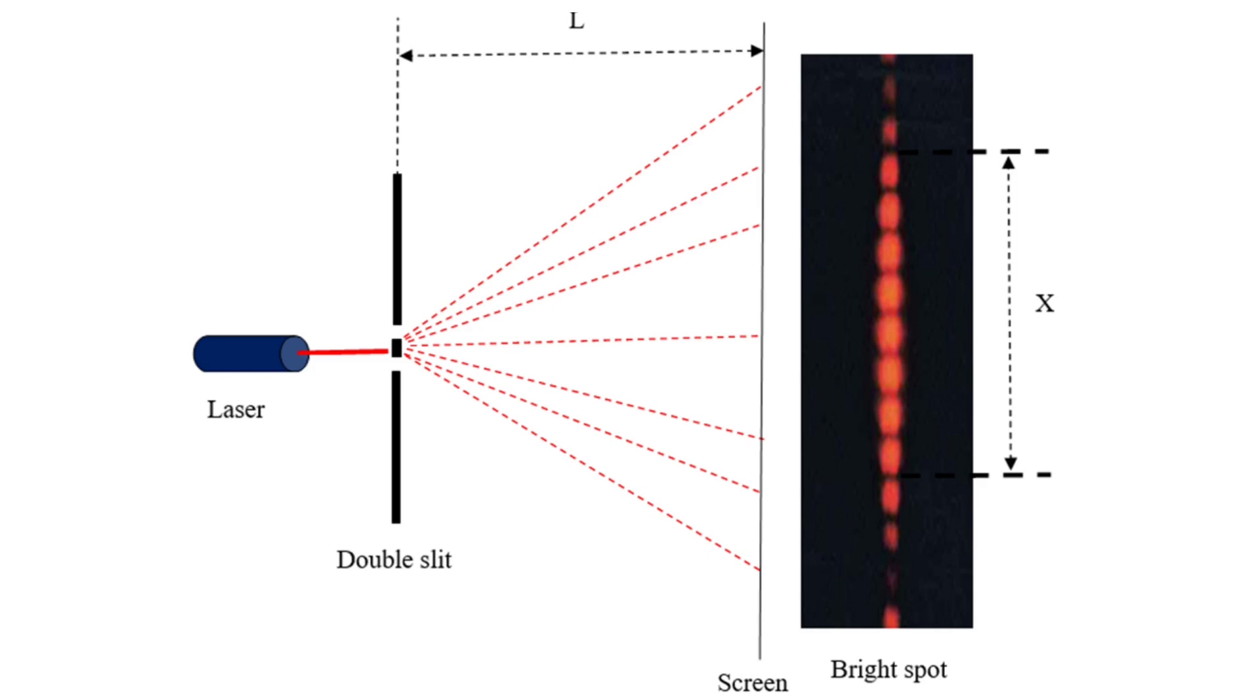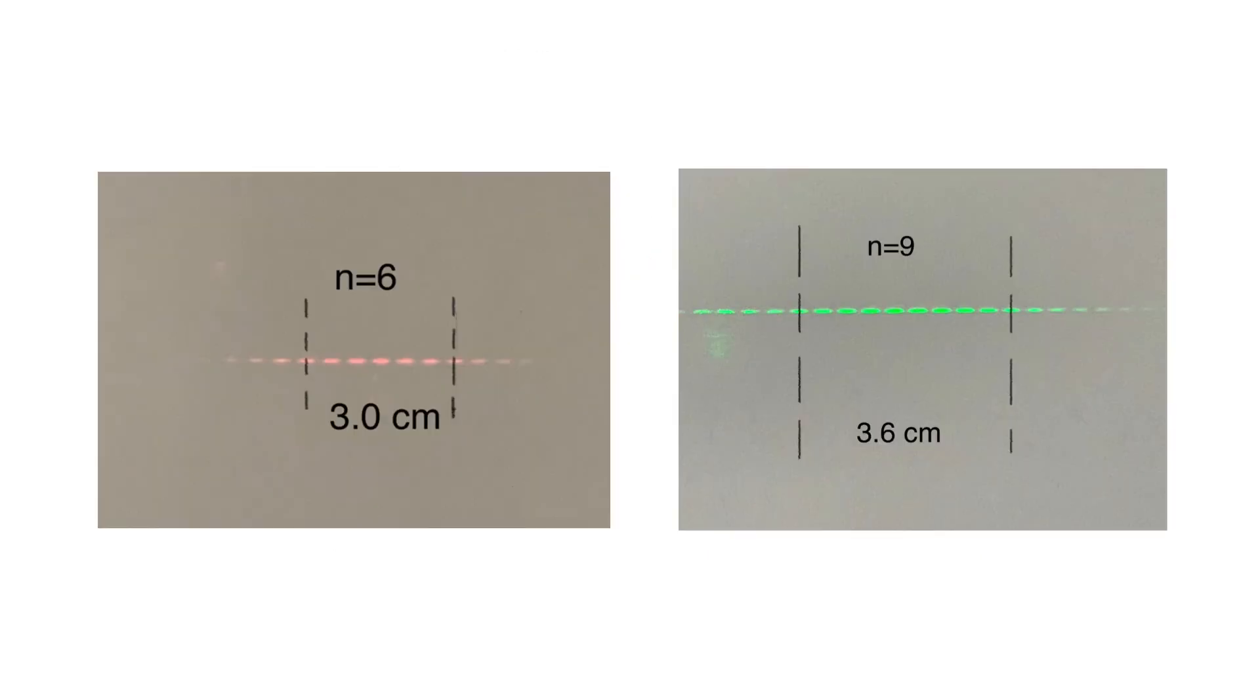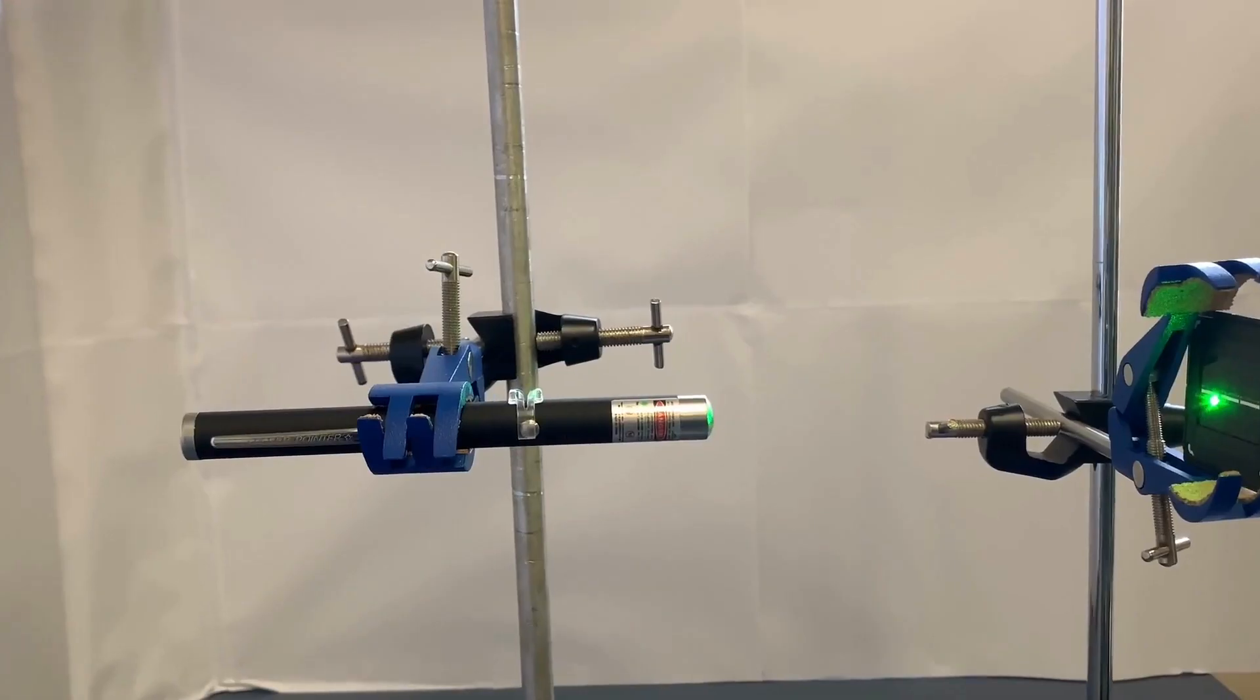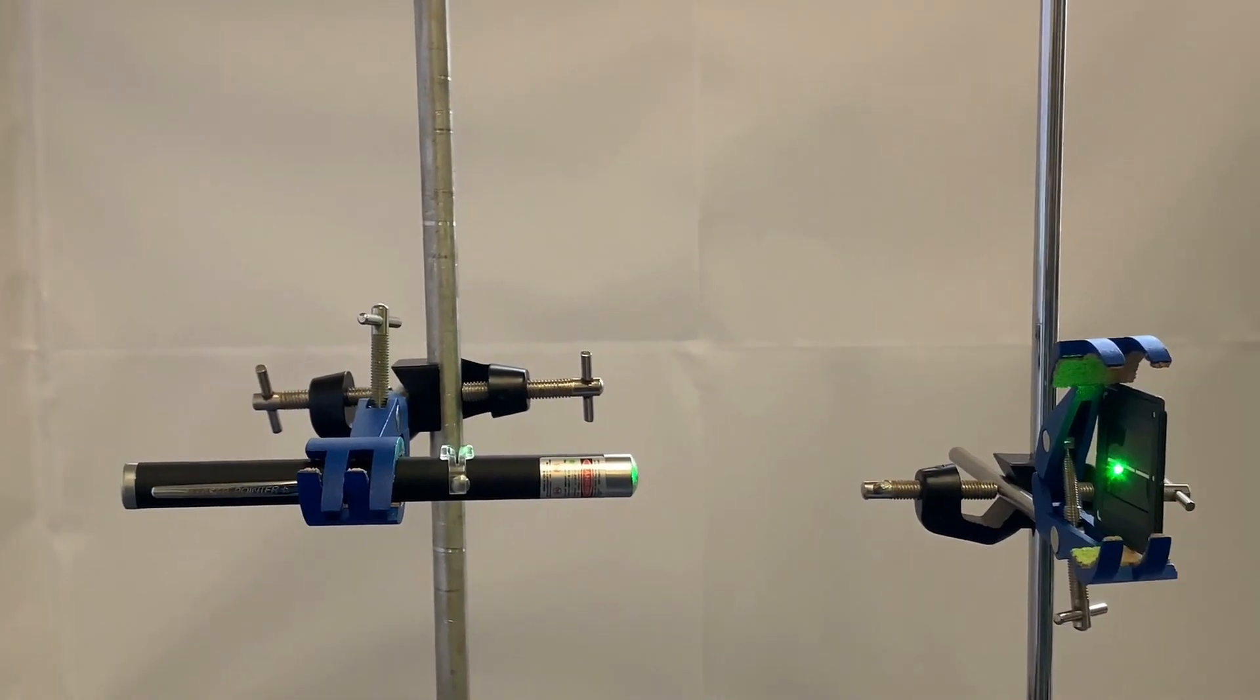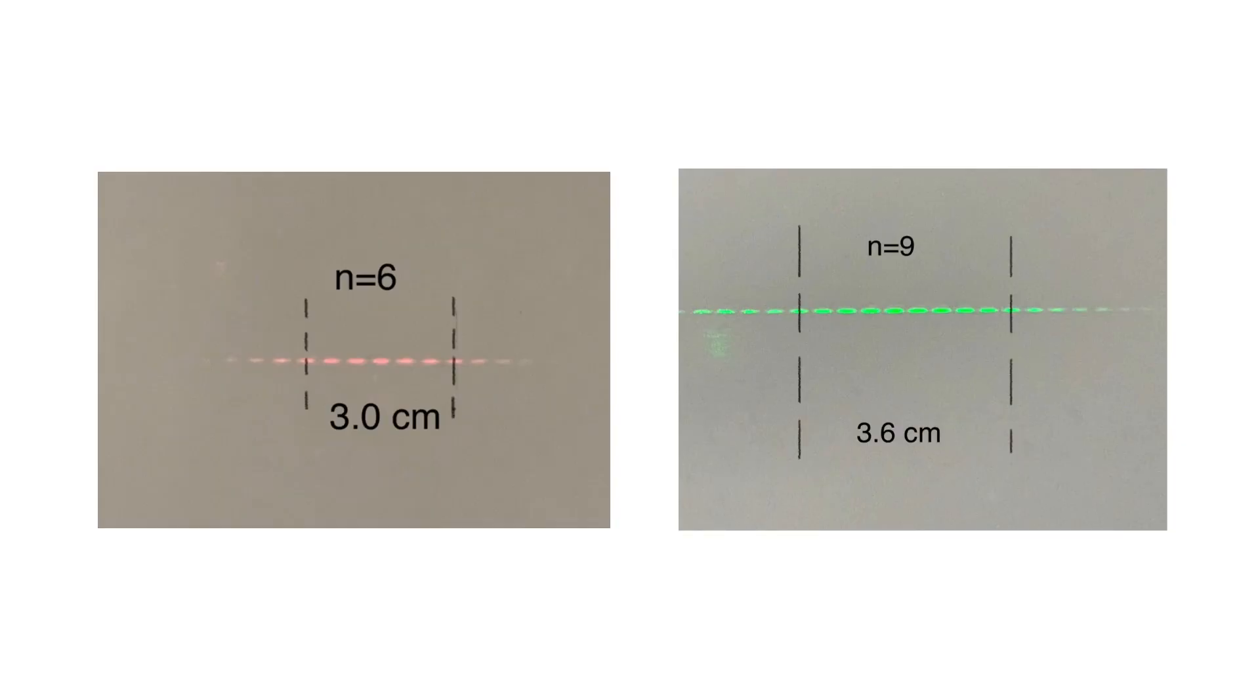Laser beam passes through double-slit. When we look at the screen, we'll see an interesting pattern of alternating light and dark bands. This pattern is the interference pattern created by the double-slit experiment. We can measure the distance of the pattern using this experiment.